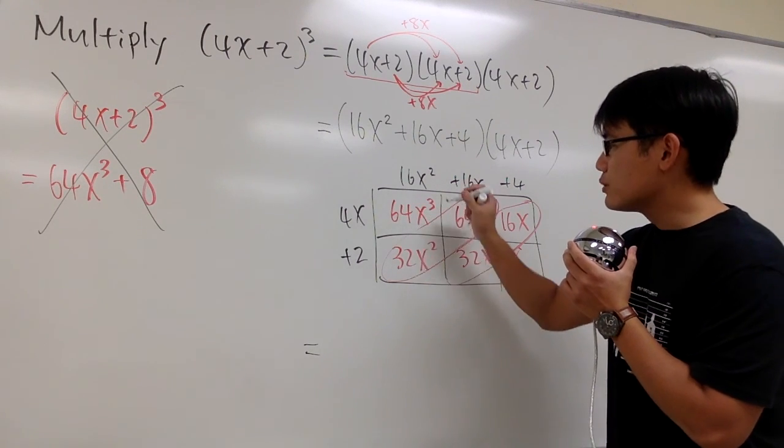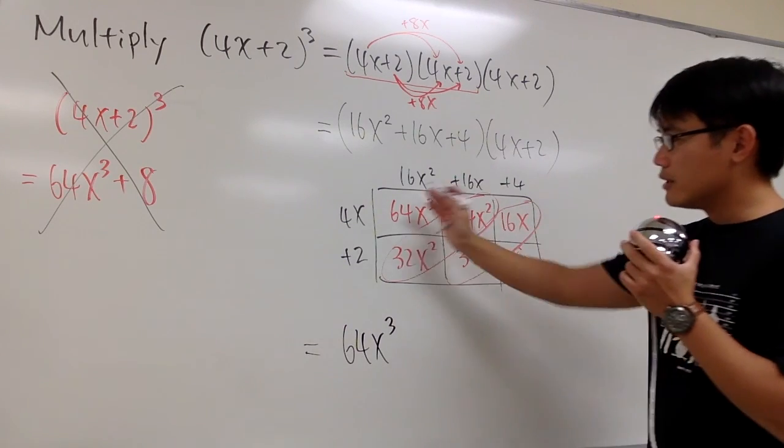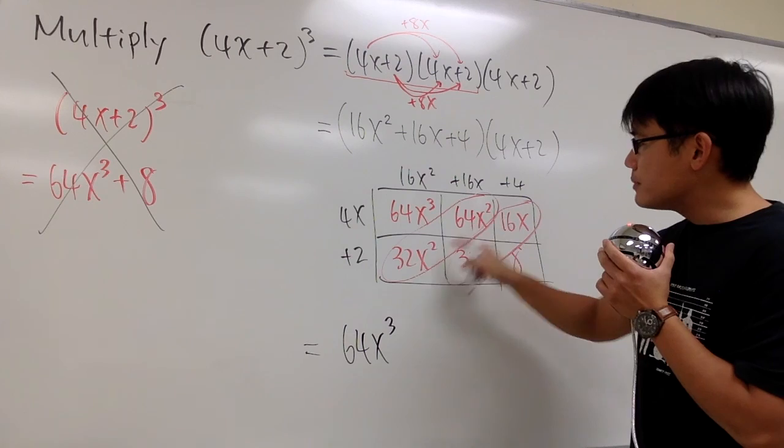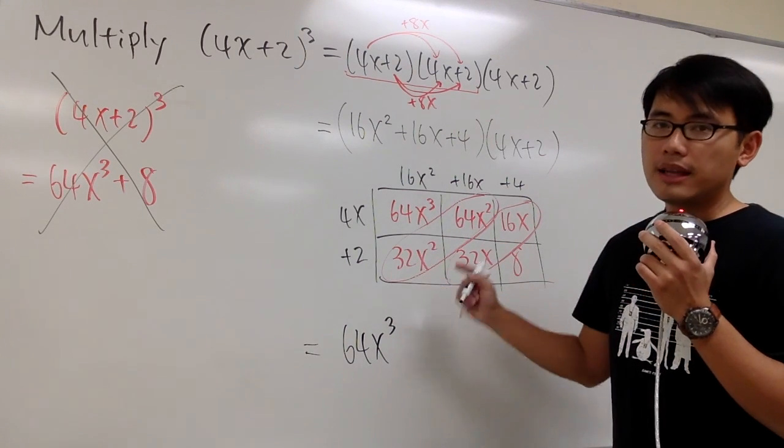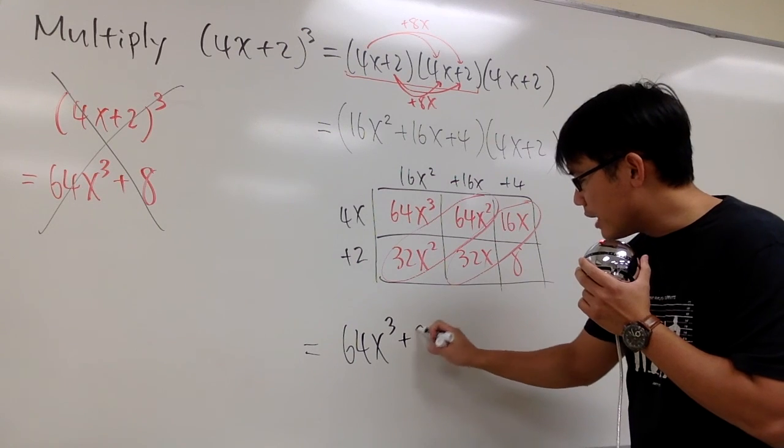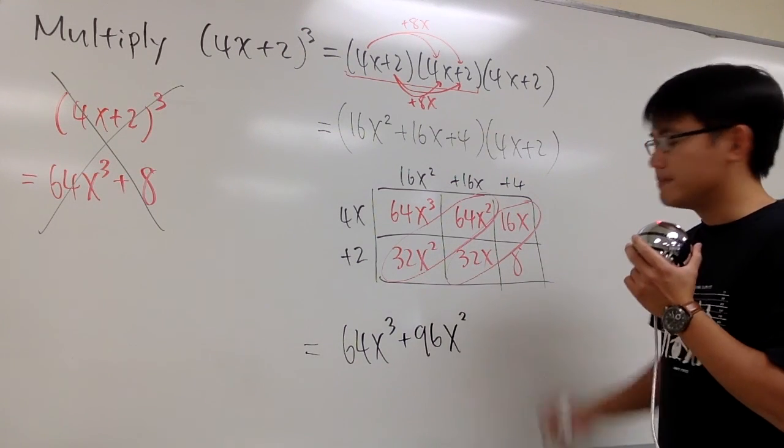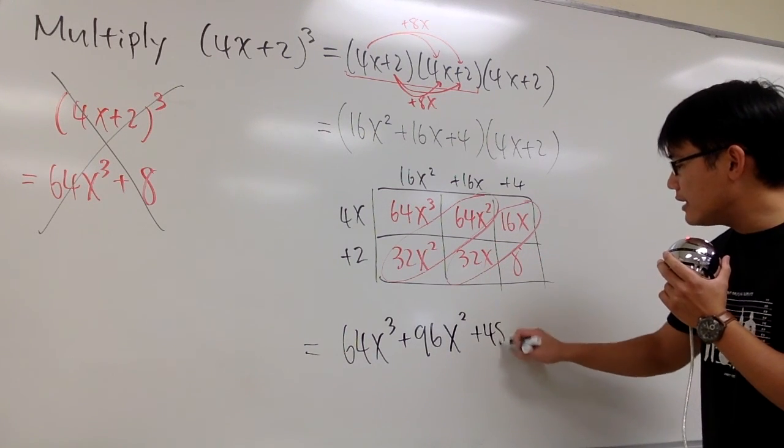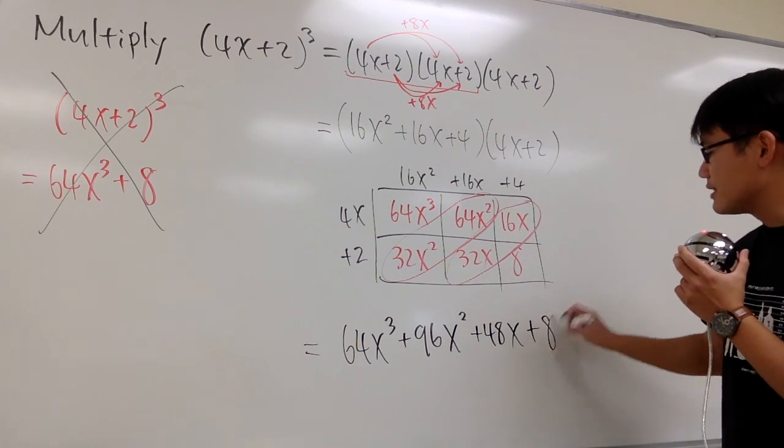And then this and that, they are both the x squared terms, so we just combine 64 plus 32, that's 96, so we add them up, 96, and we'll keep x squared term. And then 16x plus 32x, that will give us plus 48x, and then at the end, this is the positive 8, so we have plus 8.